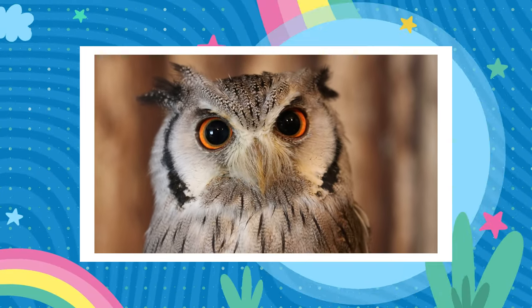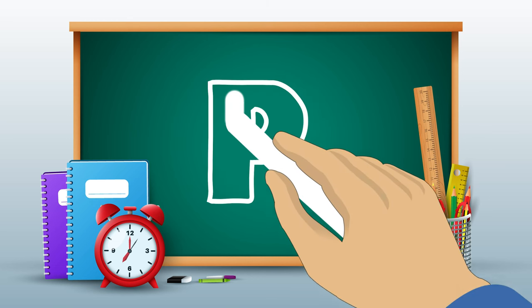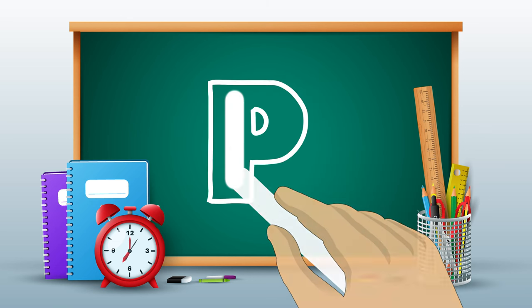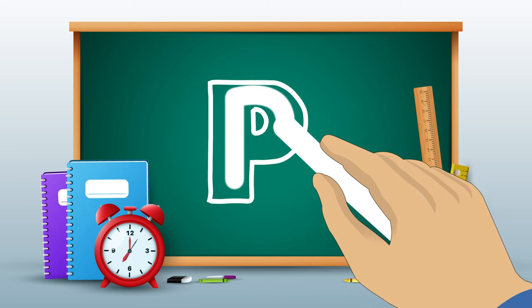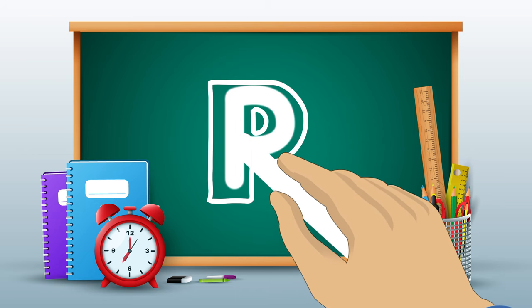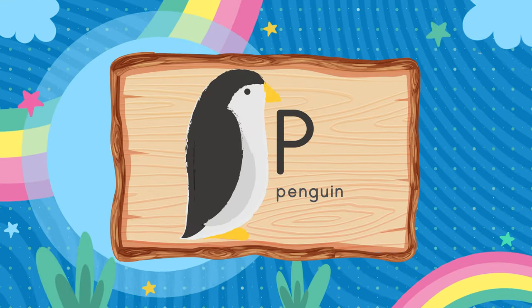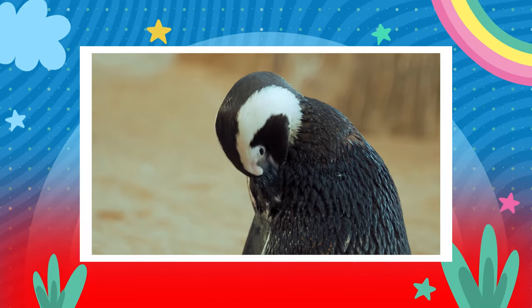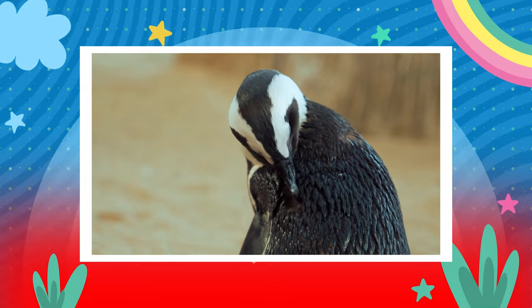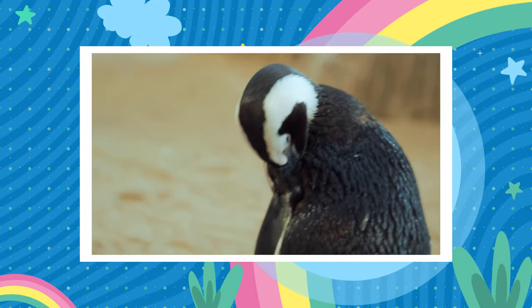Let's write the next one, letter P. Pull down, back to the top, around and in. P is for Penguin.